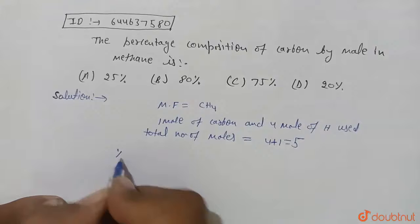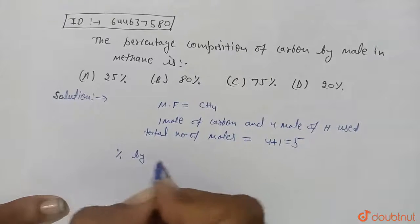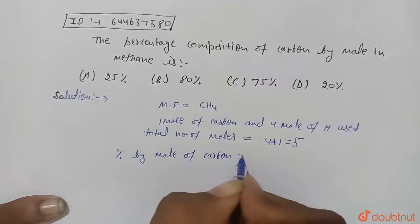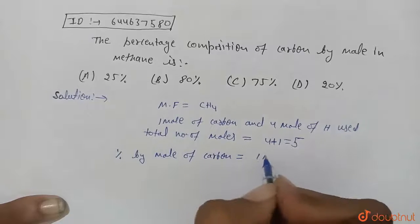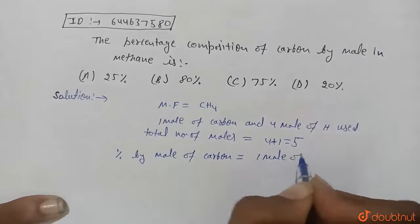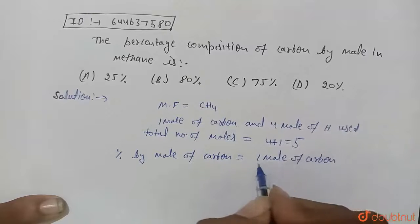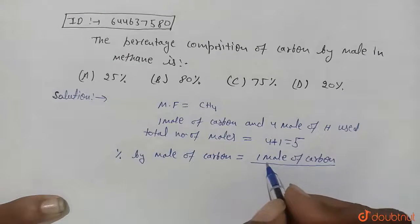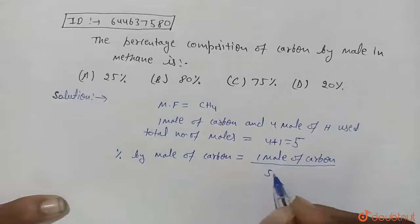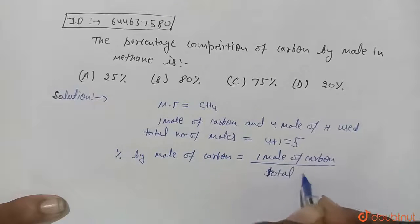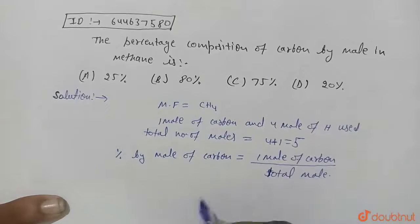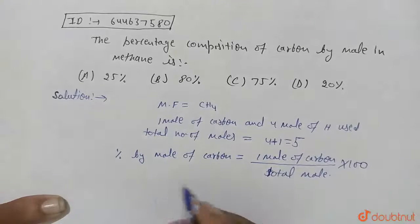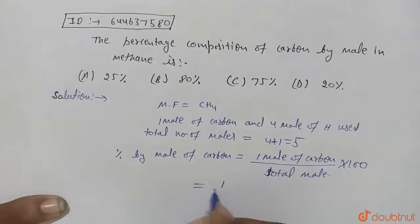We write one mole of carbon atom upon total moles. For percentage, multiply by hundred. Now one divided by total mole, which is five, times hundred.